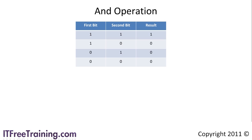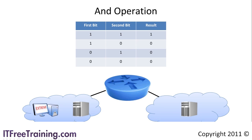Why is the AND operator important? Later in this course you will learn the AND operator is used to determine the destination of a packet. Consider this small network. If a computer sends data over the network to a server, the computer needs to determine if the data is to be sent directly to the server or via a router. If the server is on the same network as the client, it sends it directly. If the server is on another network, the client sends the data to a router. By using the AND operator, your computer can work out where to send the data. This process will be explained in much more detail later in the course.